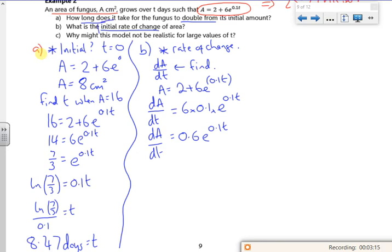Now we want the initial rate of change. So I want to find when t is 0. So dA by dt is 0.6e to 0.1 lots of 0. So that's going to give me 0.6.